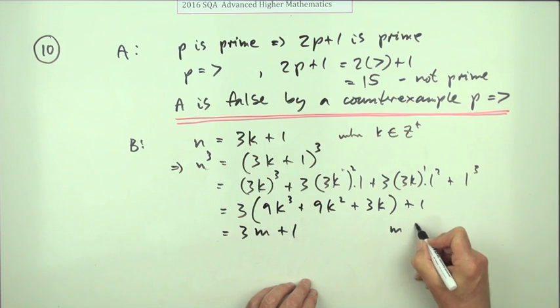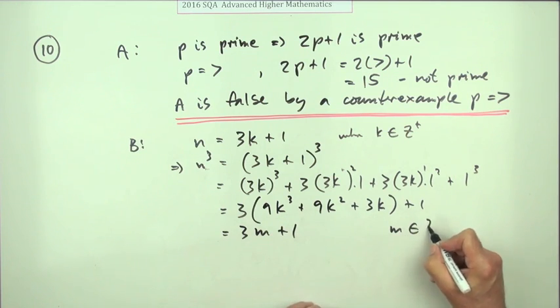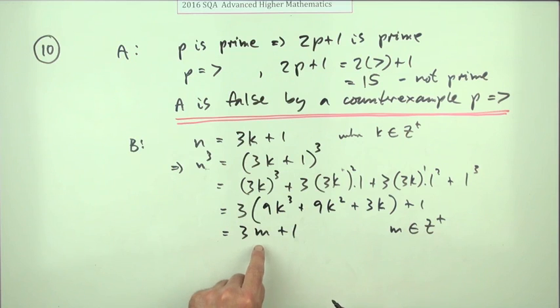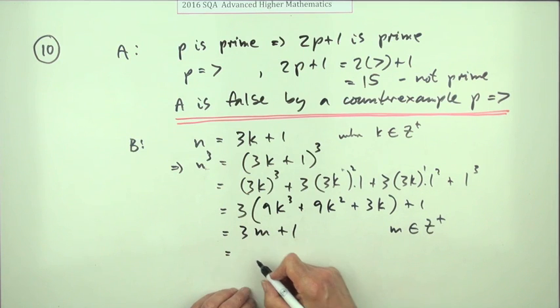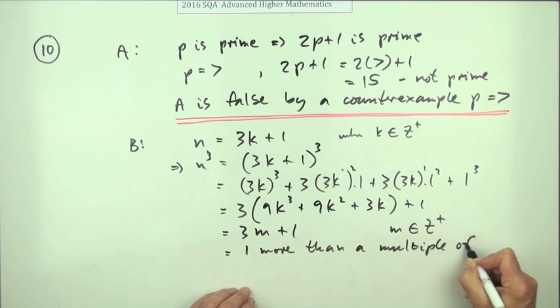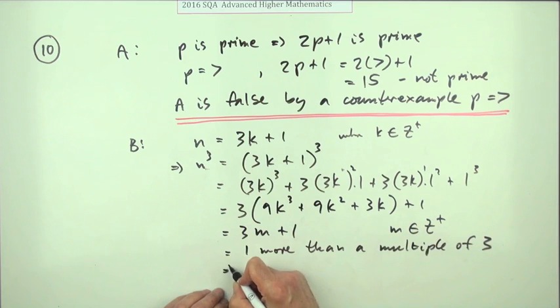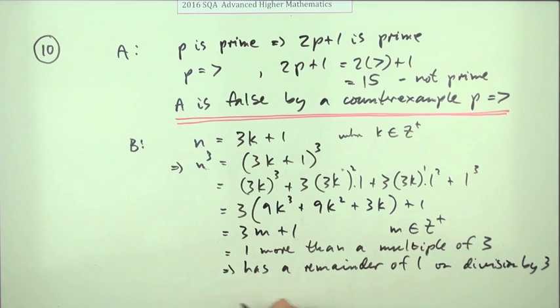It's just the case of saying how do you know it's the same statement as the beginning - how does that show it would have a remainder of 1? Put a statement down: 1 more than a multiple of 3 means has a remainder of 1 on division by 3. Conclusion: B is true.